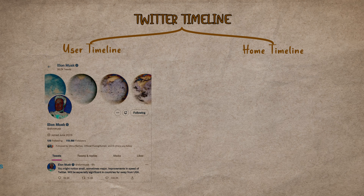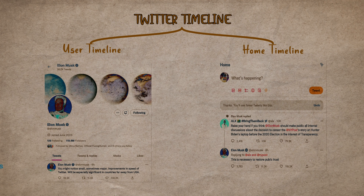The user timeline is the collection of all your tweets, and it is fetched or read from the disk. The home timeline is a collection of tweets from the people you follow — basically, your homepage.